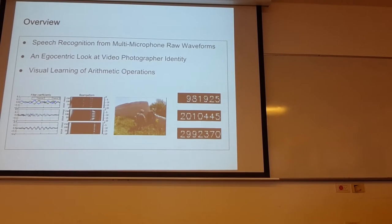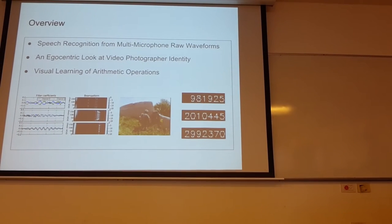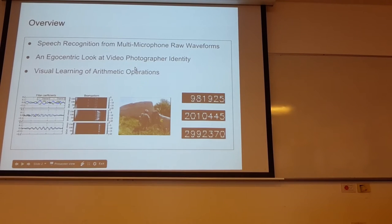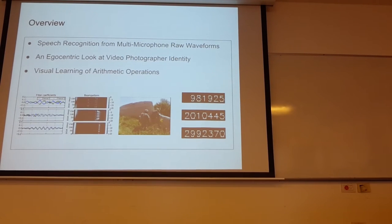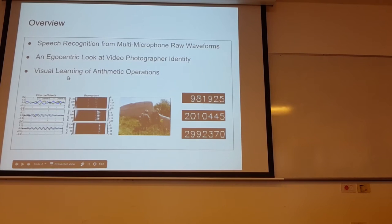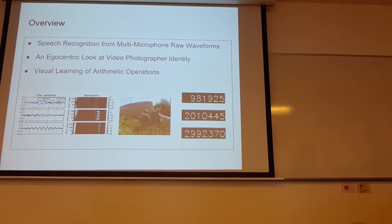This is based on three papers. We start by talking about speech recognition from multi-microphone raw waveforms — basically doing automatic speech recognition directly from the waveforms, the microphone signals themselves, as opposed to some other representation. Then we discuss a novel application: an egocentric look at video photographer identity — being able to recognize the photographer of an egocentric video. And then we discuss a task for end-to-end learning: visual learning of arithmetic operations, being able to learn arithmetic just from pictures.